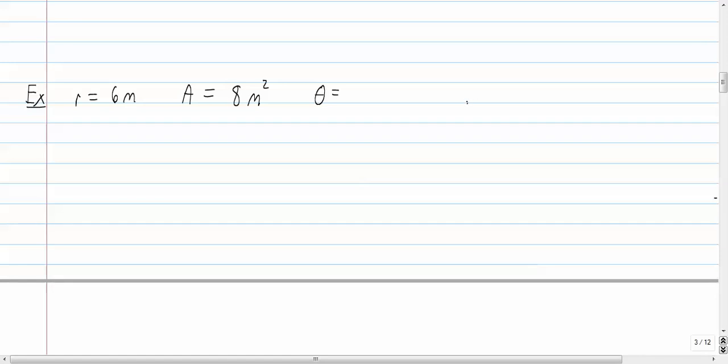Alright, so our formula is area equals one-half times r squared theta. So we could go ahead and solve for theta now and just use the variables and solve, or we could just plug in what we have and solve for theta. That's probably the best bet on this one.